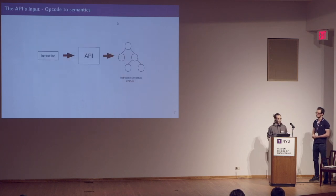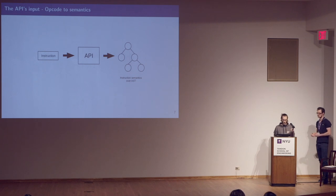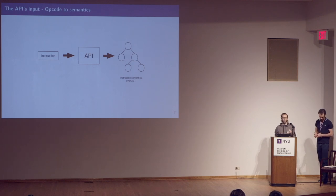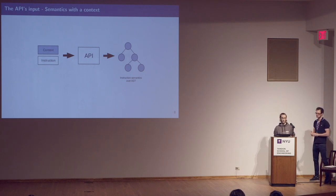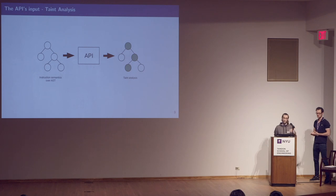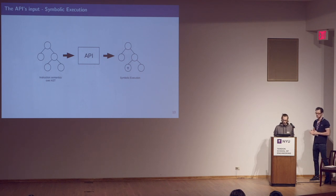The Triton API is really easy to use. You give an instruction and get back all information about the instruction semantics over an abstract syntax tree. If you give a context with the instruction, you get back an AST according to the context. On this AST, you are able to taint some input data and follow your input data during execution. You are also able to define symbolic variables, do symbolic execution, and perform simplification.